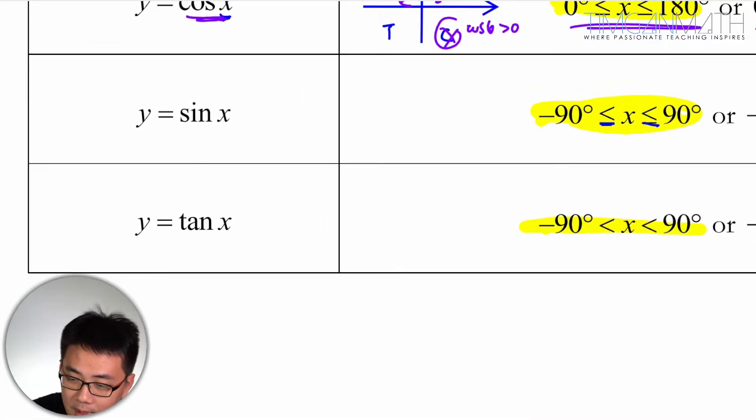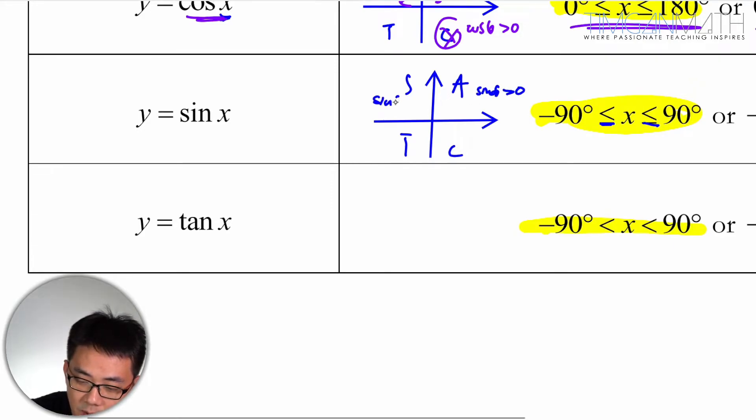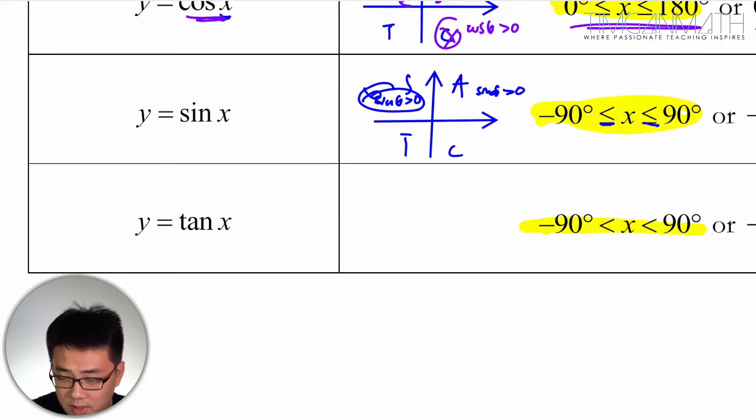So let's look at sine. Then sine makes sense as well because if this is ASTC, you know that sine is positive here. So sine is positive here, and sine is positive here as well. So it doesn't make sense for us to choose this portion because we want both sine to be both positive and negative.